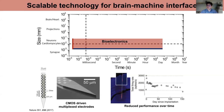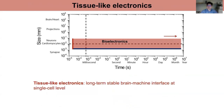However, the signal is not very stable. Over a couple of weeks or a month, you will lose the activity you can collect from those neurons. In the first part of my talk, I want to discuss the tissue-like electronics we are developing, providing a long-term stable brain-machine interface at the single-cell level.